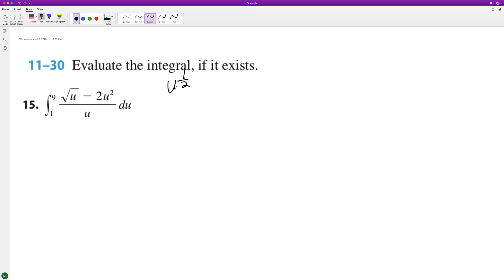We end up with u raised to the negative 1/2. When we divide by an exponent with the same base, we just subtract from it. And then this becomes minus 2u.